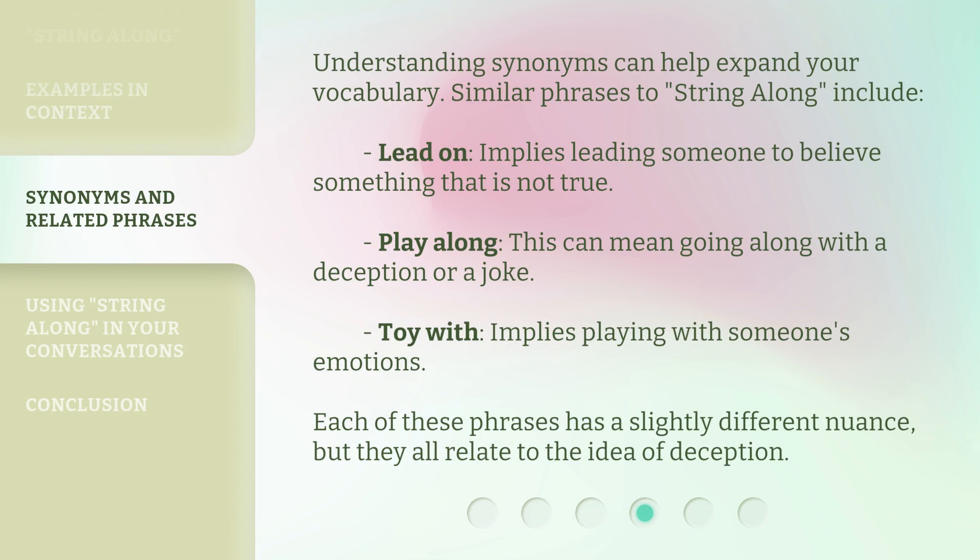Understanding synonyms can help expand your vocabulary. Similar phrases to String Along include: Lead On — implies leading someone to believe something that is not true; Play Along — this can mean going along with a deception or a joke; and Toy With — implies playing with someone's emotions. Each of these phrases has a slightly different nuance, but they all relate to the idea of deception.